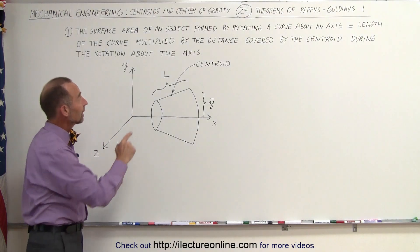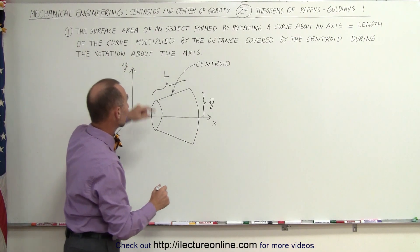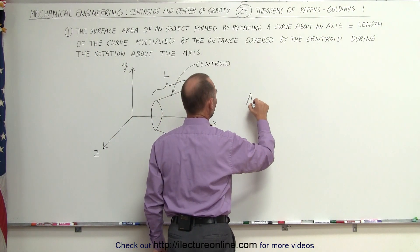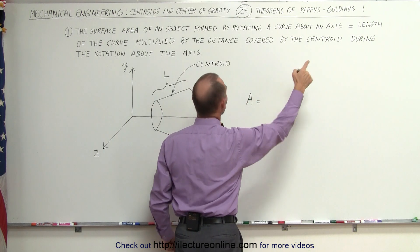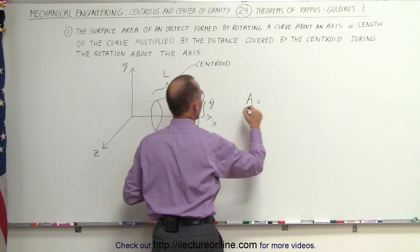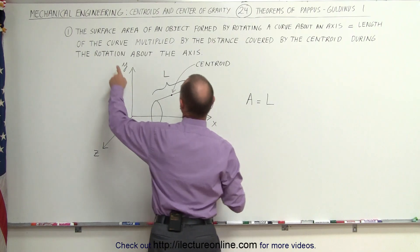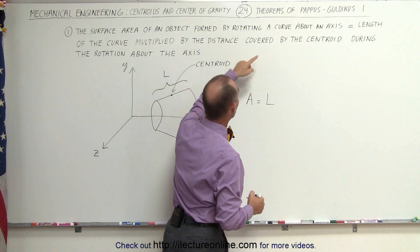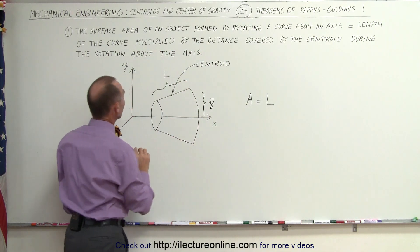We now follow the equation here. The surface area of the object formed is equal to the length of the curve, equal to L, multiplied by the distance covered by the centroid during the rotation about the axis.